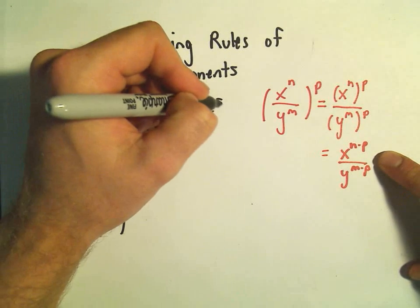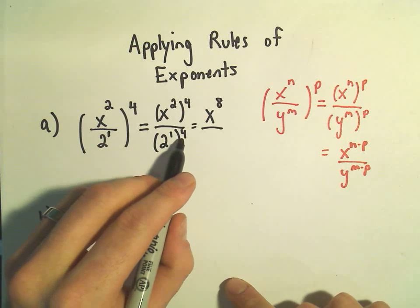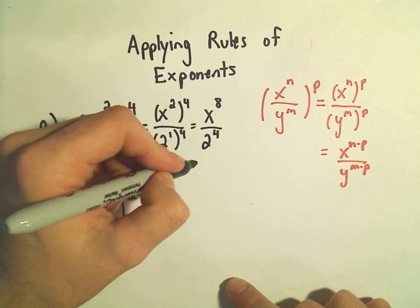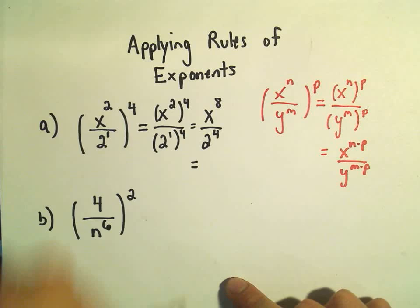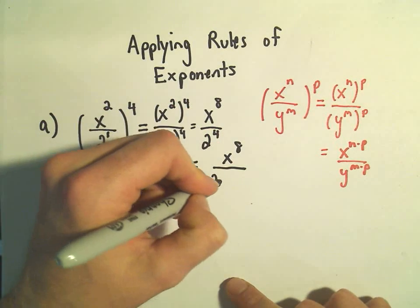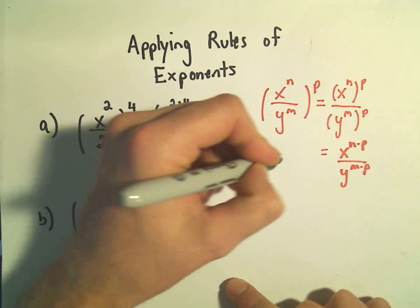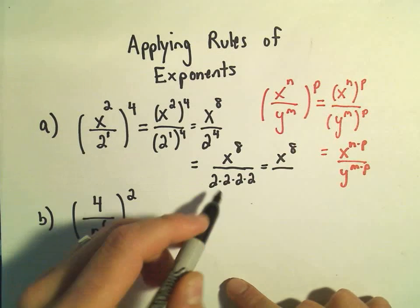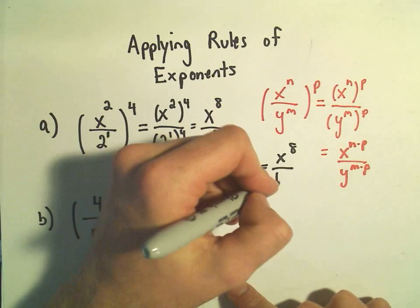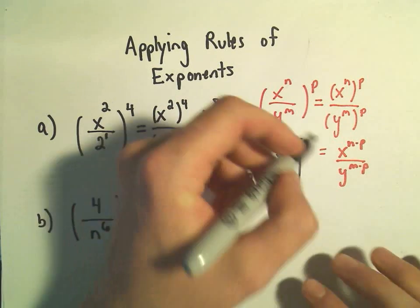It says again we just multiply the exponents. So 2 times 4 will give us x to the eighth power. We have an exponent of 1 times 4, which gives us 2 to the fourth power. There's not much you can do in terms of simplifying the numerator, so we'll just leave that x to the eighth. But we can rewrite 2 to the fourth: that's 2 times 2 times 2 times 2, which gives us 16. So our final solution is x to the eighth over 16.